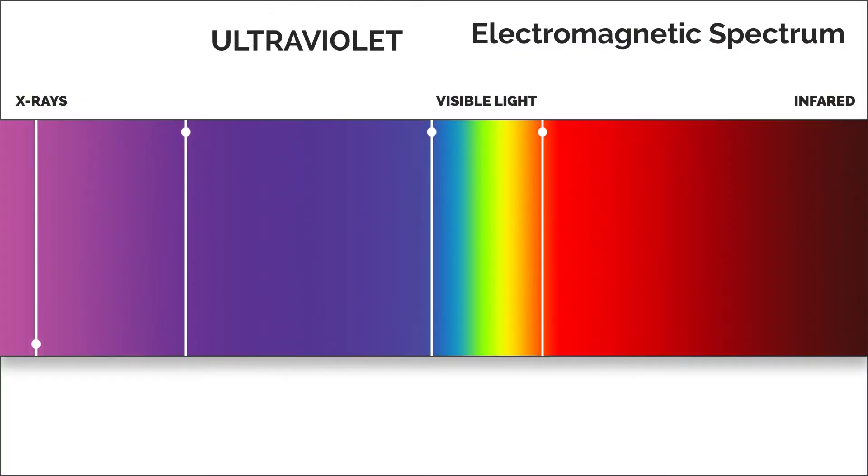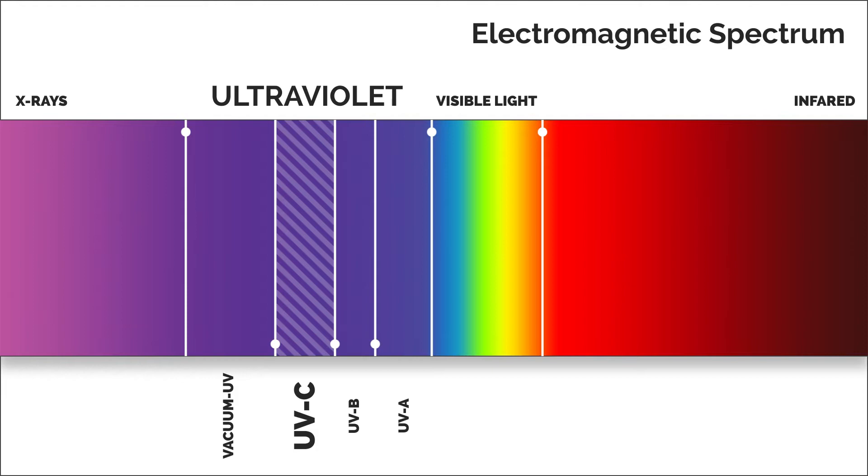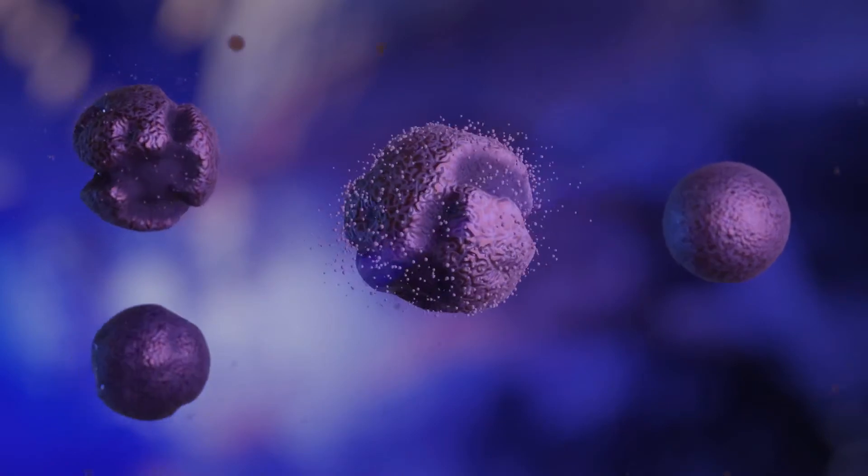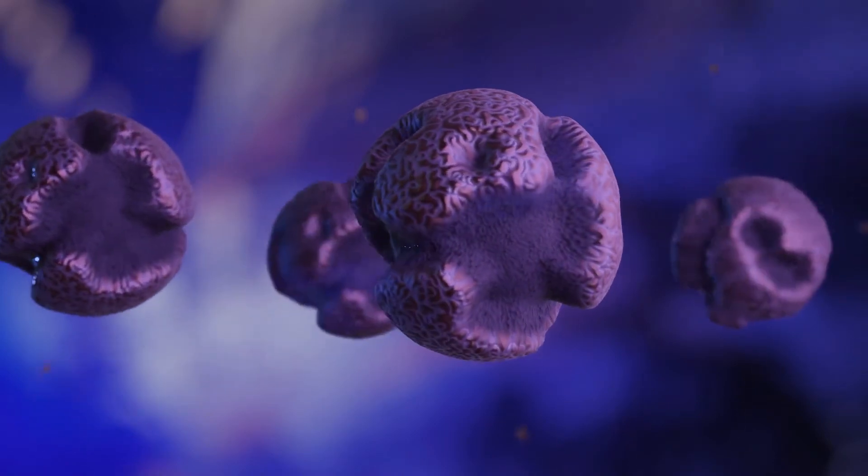Deep ultraviolet radiation, known as UV-C, is high frequency electromagnetic radiation that is invisible to the human eye and has the power to break down the DNA and RNA of viral and bacterial pathogens so they can no longer reproduce or cause illnesses.